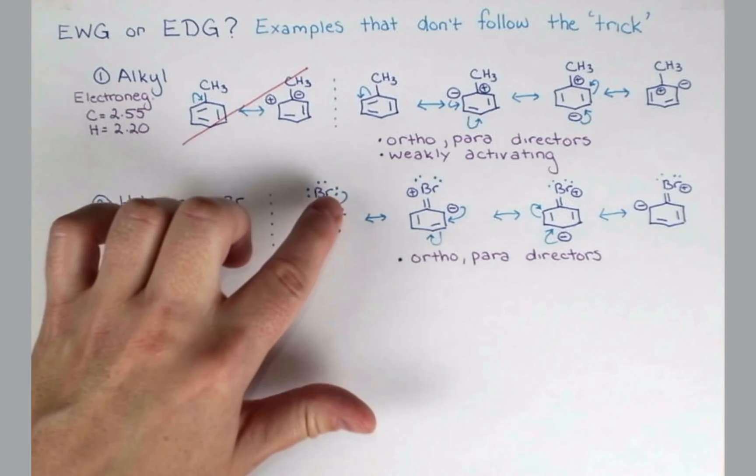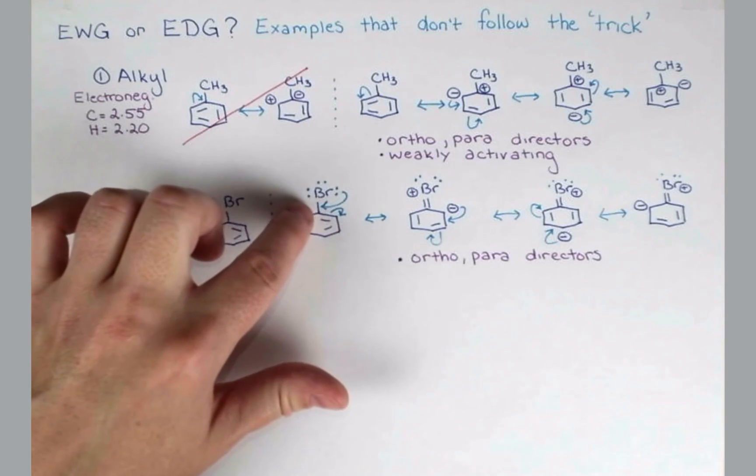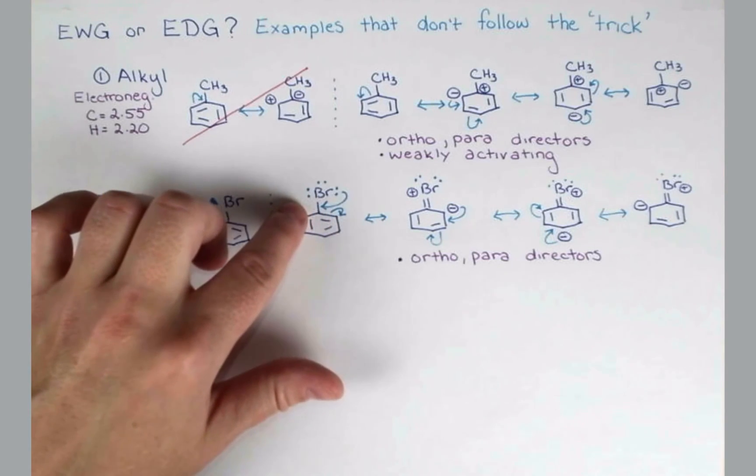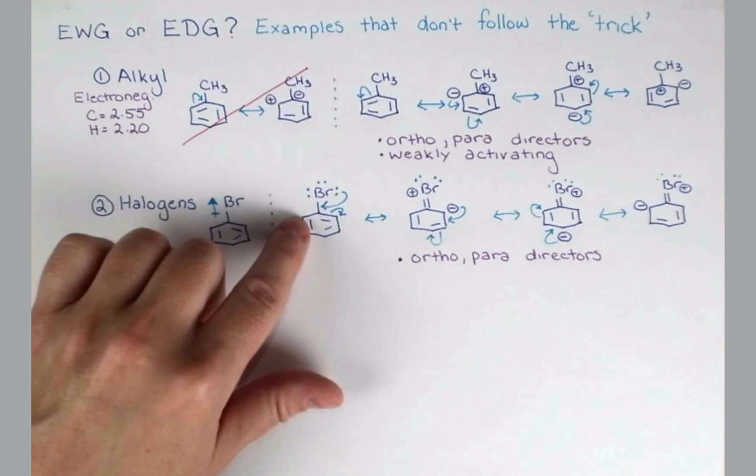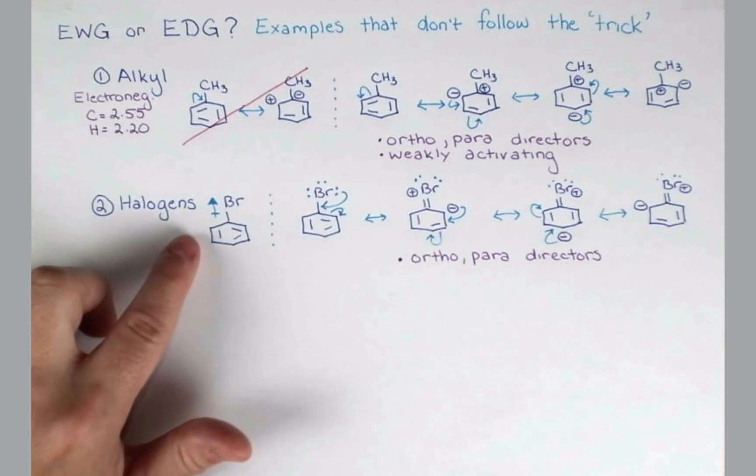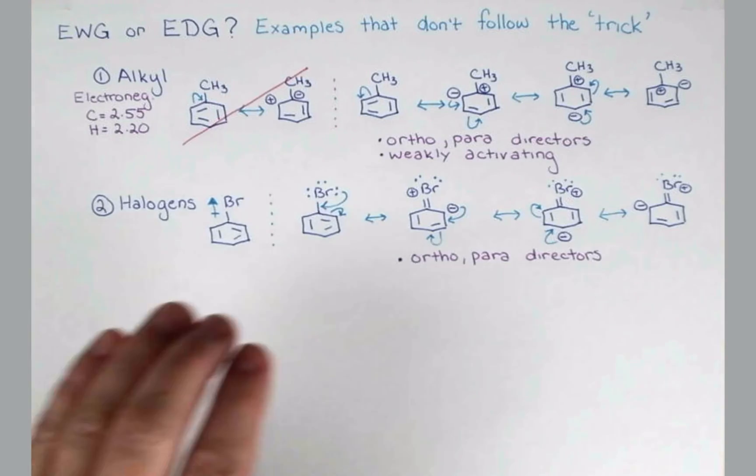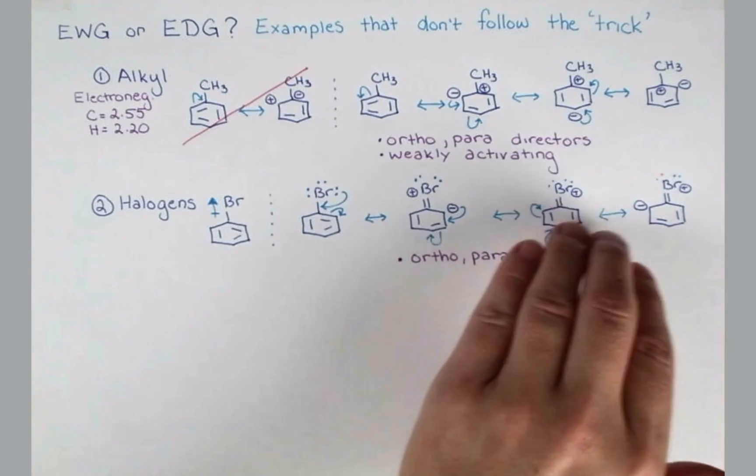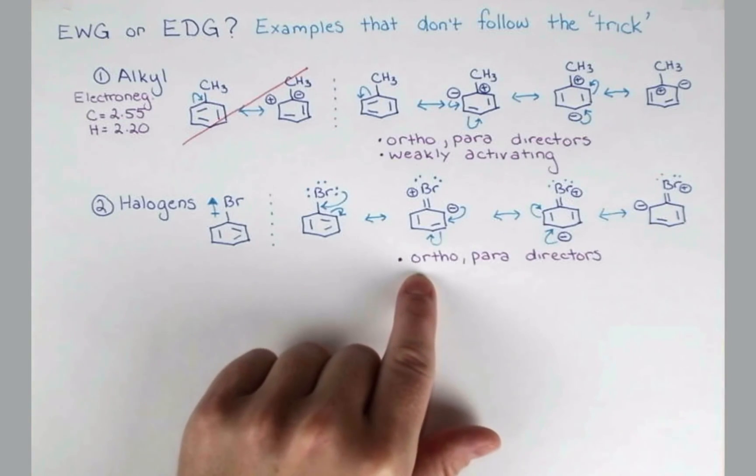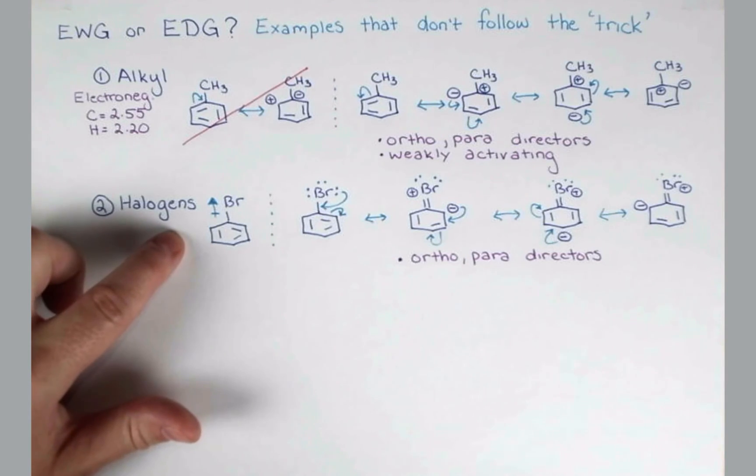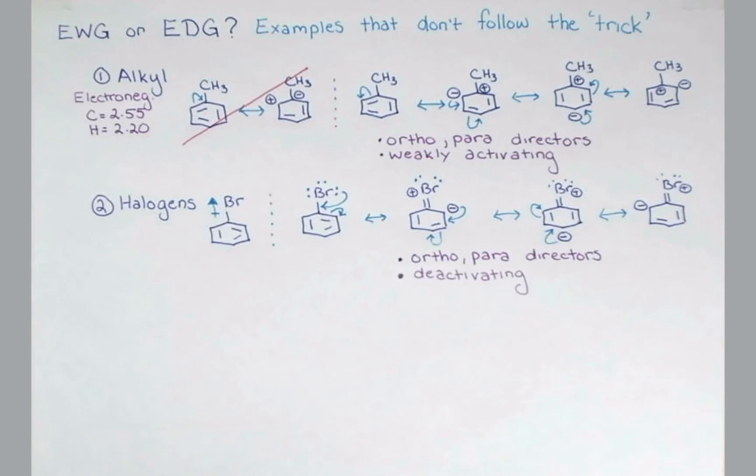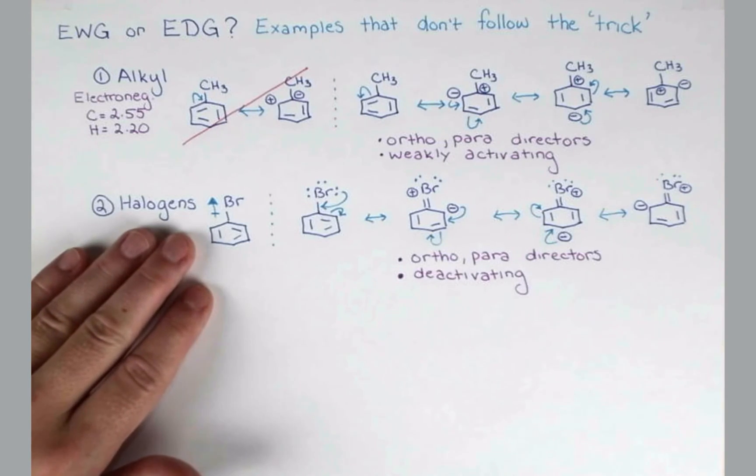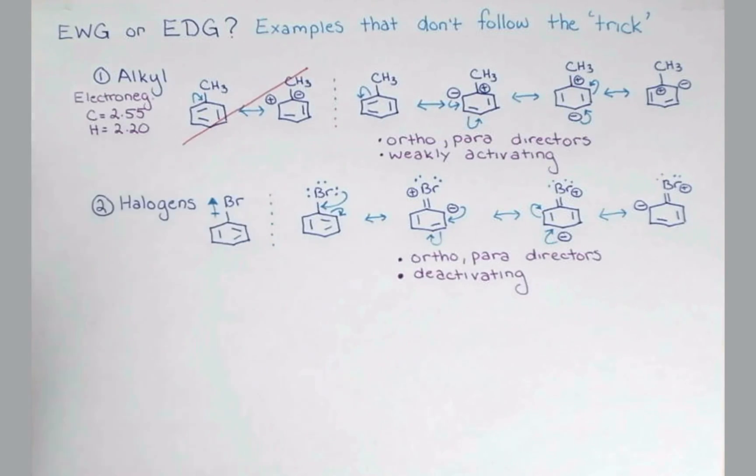Now the halogens just aren't quite as good at donating their electrons by resonance as something like oxygen or nitrogen. So this inductive effect is actually pretty strong. Although these resonance forms make the halogens ortho para directors, this inductive effect is pronounced enough that these are deactivating groups. So bromobenzene is less reactive than benzene.